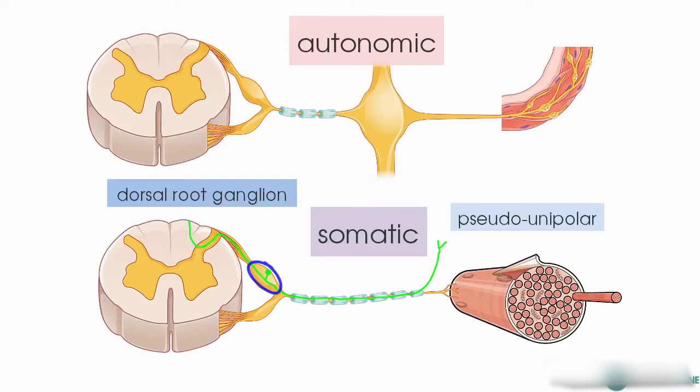The sensory fibres ascend to the brain via the dorsal columns or the anterolateral system — the spinothalamic tract — in which case they would cross over and ascend.